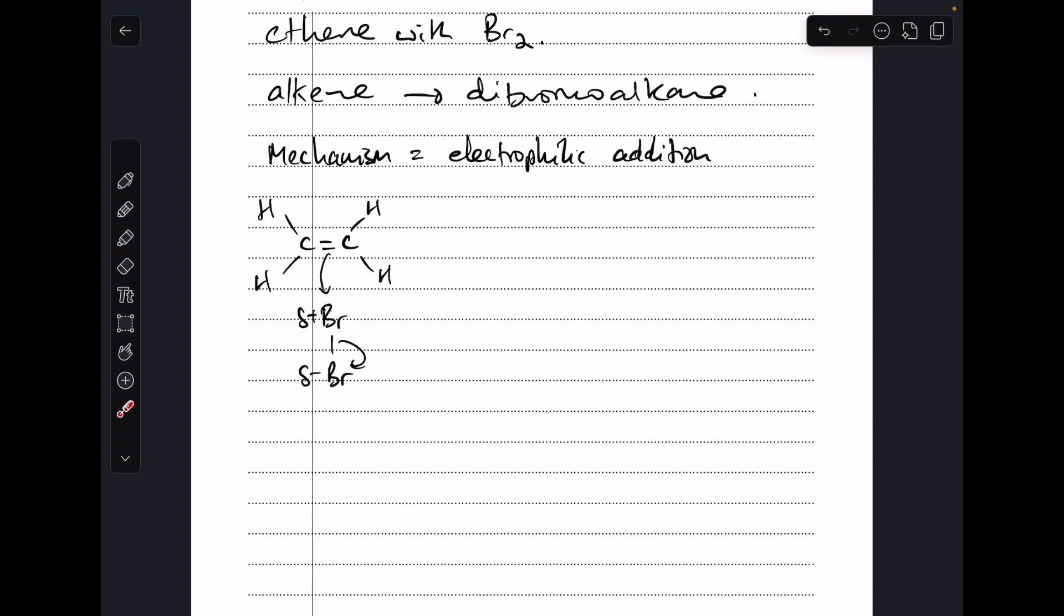So we'll run through the mechanism. Dipole across the bromine molecule, slightly positive nearest the carbon-carbon double bond. Curly arrow from the double bond to the slightly positive bromine, and another curly arrow from the bond between the bromine atoms onto the delta negative bromine. So that's going to give us this intermediate here. So I've put the bromine on the right-hand carbon, which means I need a positive charge on the left-hand one.